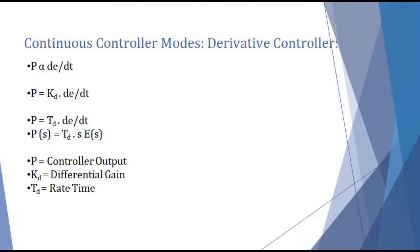Now, let us find out the final expression for the controller output of a derivative controller. Since the controller output in case of a derivative controller is directly proportional to the rate of change of errors, we can write P is proportional to dE/dt, where dE/dt is the rate of change of error. Now, in order to remove this proportionality symbol, we have to introduce a constant of proportionality.